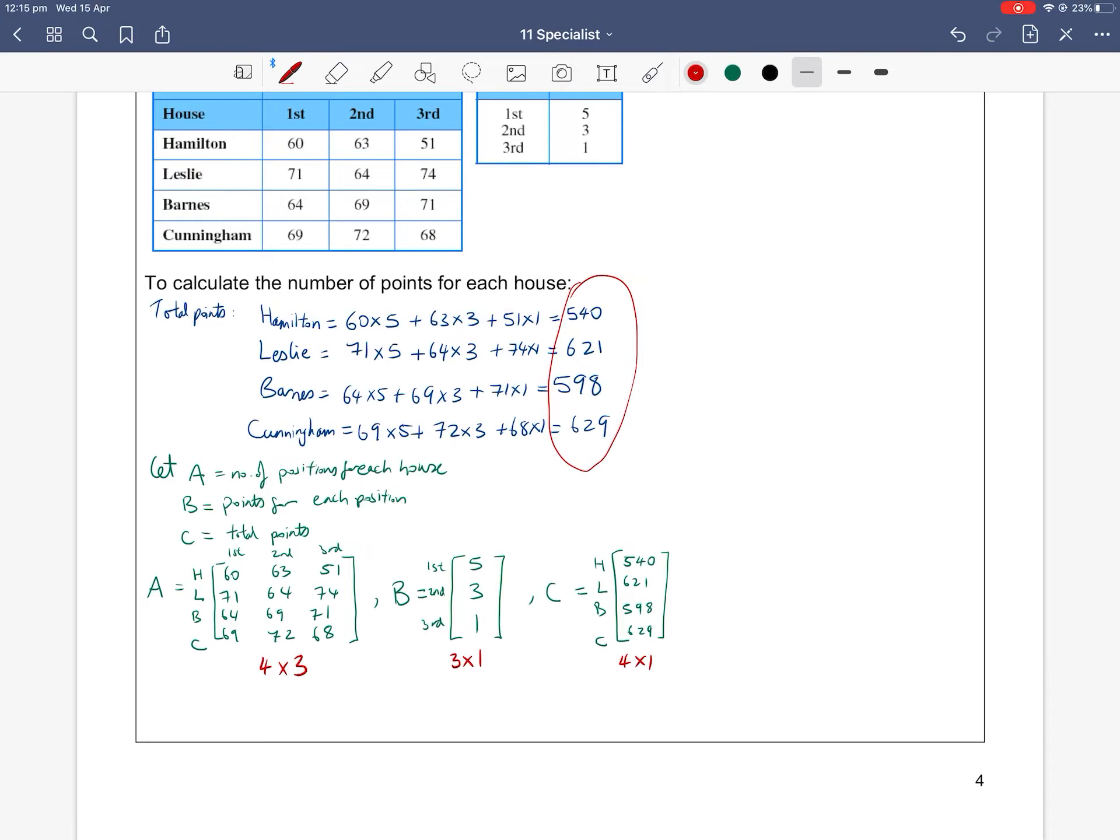Matrix B is the number of points per position that a student came. And then part C is the total number of points that every house gains. So we define a matrix multiplication as A times B equals C. And so how do we matrix multiply? We multiply and then add in between them to get my final answer there, 540.